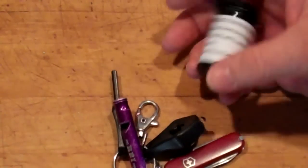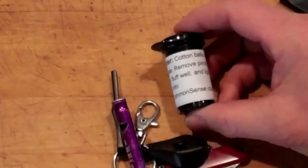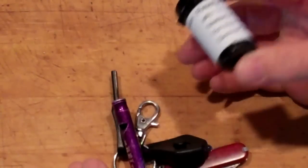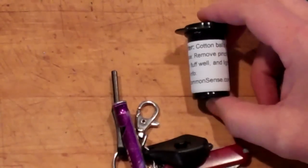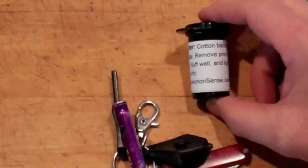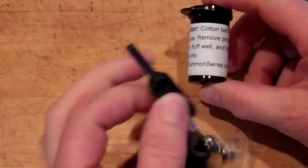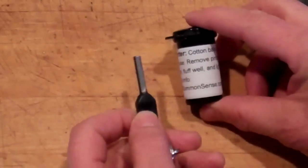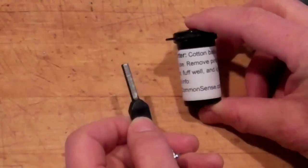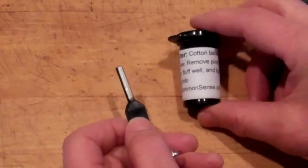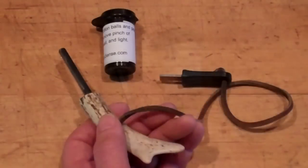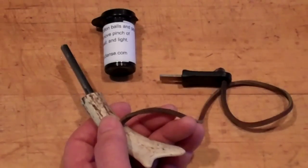Make sure you carry some tinder with you of some sort. Cotton balls and Vaseline are excellent. You can get three in a bottle this size, carry it in your pocket, and it will start several fires. Cotton balls and Vaseline and this ferrocerium rod, in my opinion, are virtually foolproof fire starter methods.